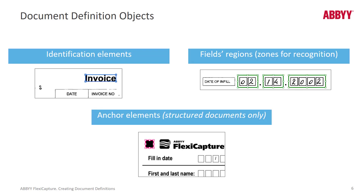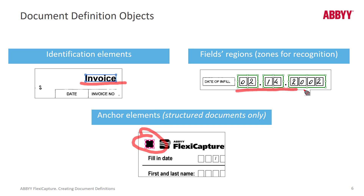Document definitions have items to identify the document. We can identify the document based on finding some keyword, or even finding a cornerstone, which can help us find the actual data. Then we've got fields that actually collect the data.